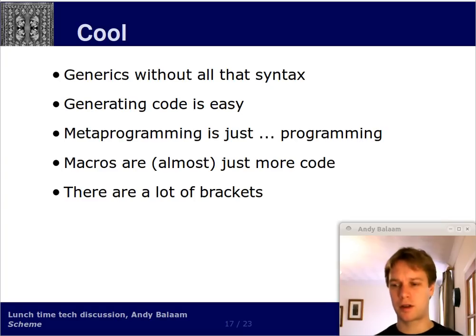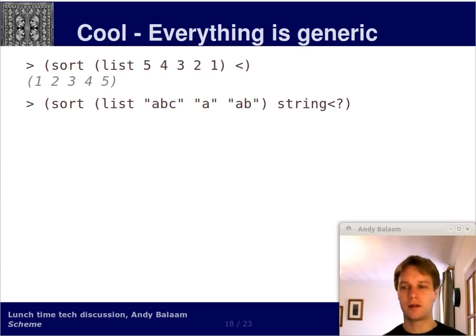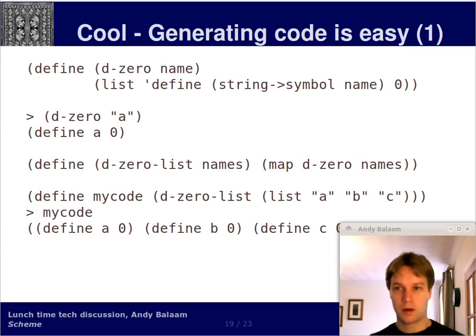There's things called macros, which are kind of metaprogramming. Think of a C macro, but part of the language and easy to use and difficult to make mistakes. Well, in Scheme, macros are almost just the same as writing more code. And one of the things that you are going to learn to love is that there are a lot of brackets in Scheme. So let's have a quick look. If we pass a list 5, 4, 3, 2, 1 to the sort function and we pass in the less than operator as the way that you want to sort it, the operator you want to use to compare items, we get back 1, 2, 3, 4, 5. Now if we pass the list ABCA and AB and we pass in the string less than function, which is what that weird thing on the end there is, we get back A, AB, ABC, which is the lexical sort of these things. What's important to note here is that the sort function that's running there is the same code. So generics are easy.